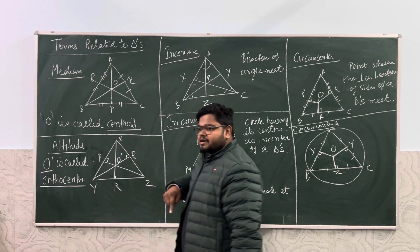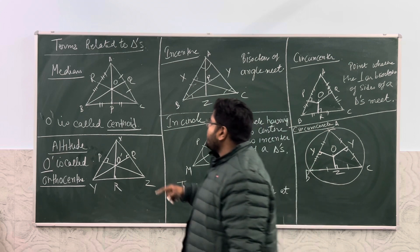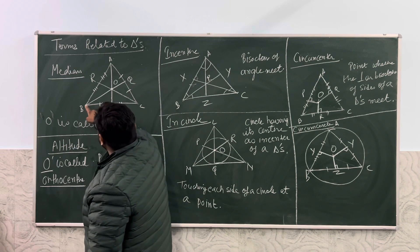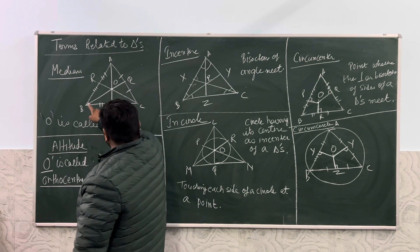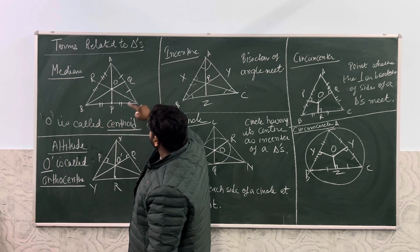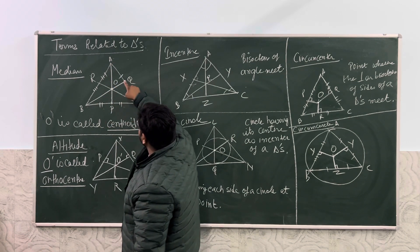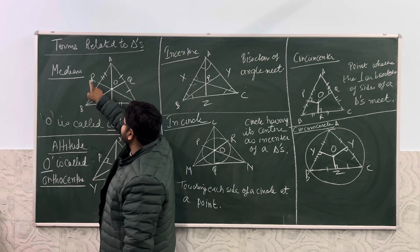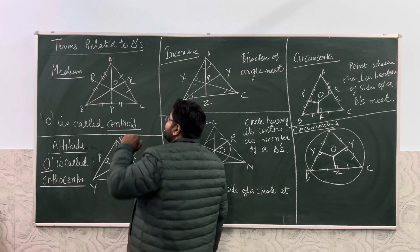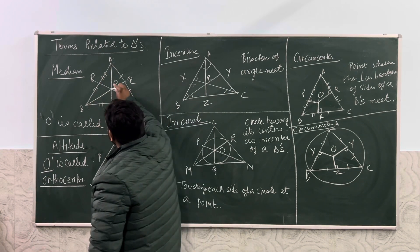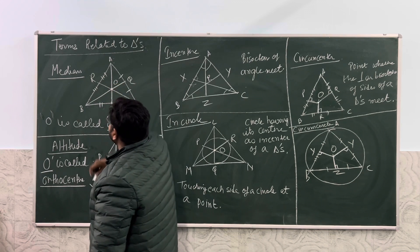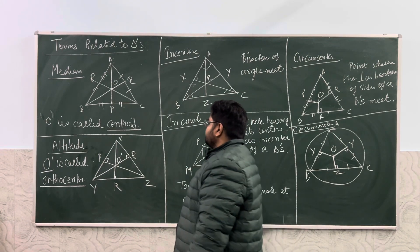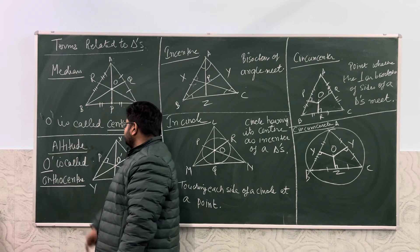There is one more property related to the median. It divides the opposite side into 2 equal parts. We have another median BQ, in which CQ becomes equal to AQ. BQ is the median, and CR is also a median, therefore BR is equal to RA. All three medians meet at a point, and that point is called the centroid.